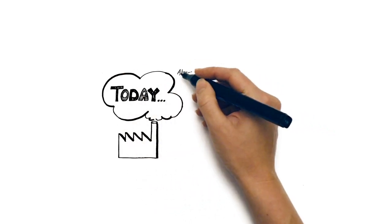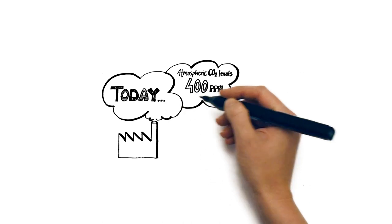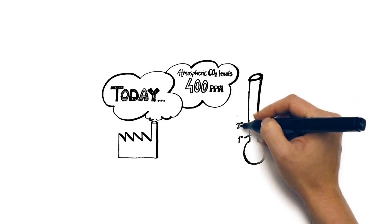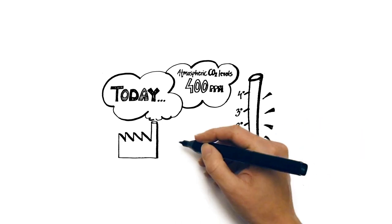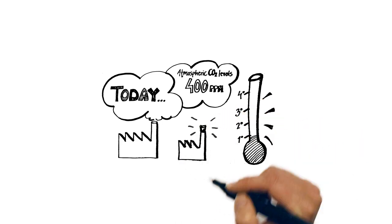Today, atmospheric CO2 levels have reached 400 parts per million, and we know that it's down to our carbon emissions, that it's causing the planet to warm, and that only near-zero emissions will stop the rise.